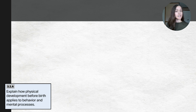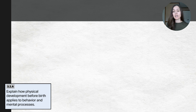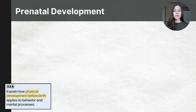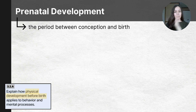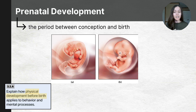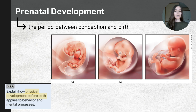The College Board's CED outlines all of the necessary concepts students should know, and they note that students should be able to explain physical development before birth and how it applies to behavior and mental processes. I want to start this video with the womb, which is prenatal development. Prenatal refers to the time period between conception and birth, and physical growth happens rapidly at this stage. In just 38 to 40 weeks, one sperm cell penetrates an egg, triggering a series of chemical events that cause the sperm and egg to become a single cell that will subdivide again and again until it becomes a 37 trillion cell human being.